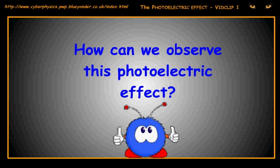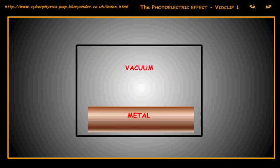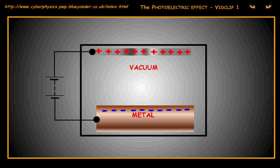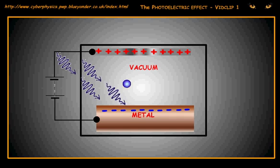How can we observe this photoelectric effect? You can only see what happens easily if you enclose the metal in a vacuum and attract the electrons away from the metal using an electric field.